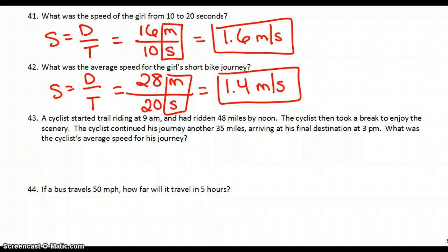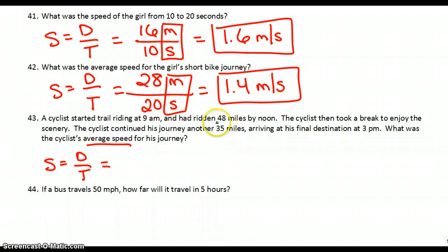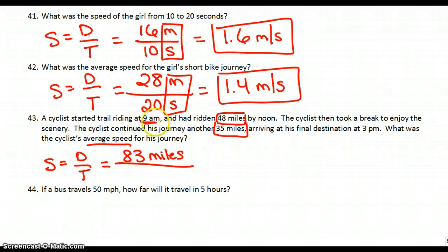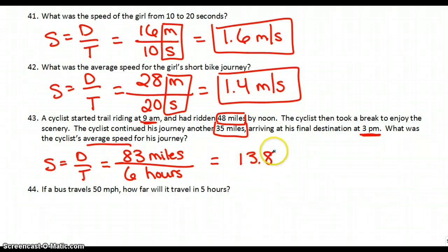43: a cyclist started trail riding at 9 a.m. and had ridden 48 miles by noon. The cyclist then took a break to enjoy the scenery, then continued for another 35 miles, arriving at his final destination at 3 p.m. What was the cyclist's average speed for the journey? Average speed is distance over time. Total distance: 48 plus 35 equals 83 miles. Time: from 9 a.m. to 3 p.m. is 6 hours. Put that in your calculator — you get 13.8 miles per hour.